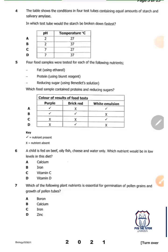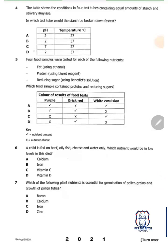Question five: Four food samples were tested for each of the following nutrients - fats using ethanol, proteins using biuret reagent, reducing sugars using Benedict's solution. Which food sample contained proteins and reducing sugars? We need to know which colors indicate their presence. Whenever there's a purple color, it means we've got proteins, and whenever there's brick red, it means you also have reducing sugars. So the answer is B because we are only interested in proteins and reducing sugars, not fats.